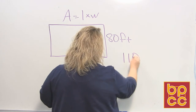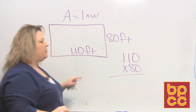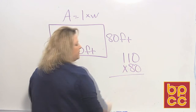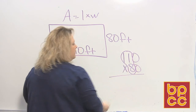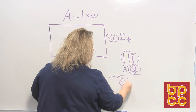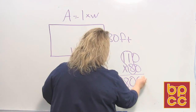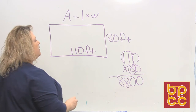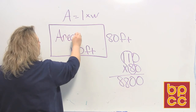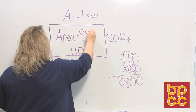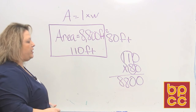When we do this multiplication, there's a shortcut I showed you in a previous module. When you multiply numbers that have zeros at the end, you can multiply 11 times 8, which equals 88, and then because there are two zeros at the end, you add them to get 8800. So the area of this plot of land is 8800 square feet. Remember to put the little superscript 2 for square units.